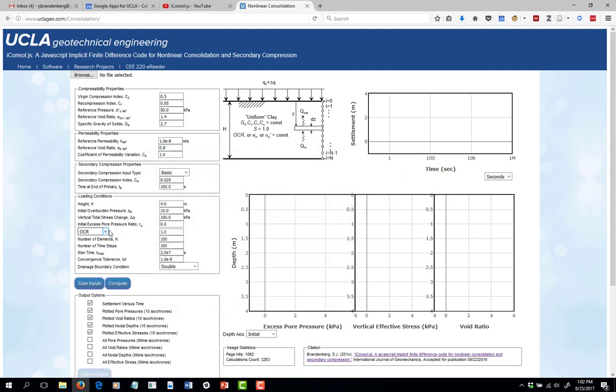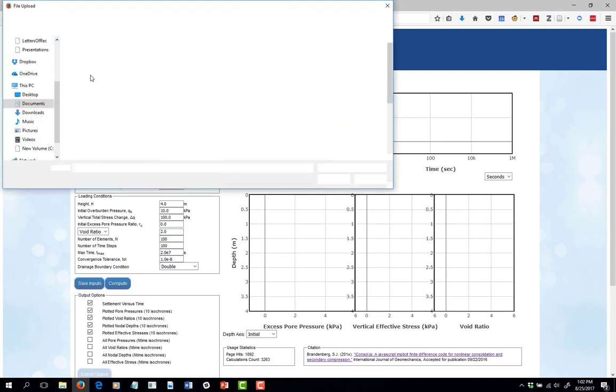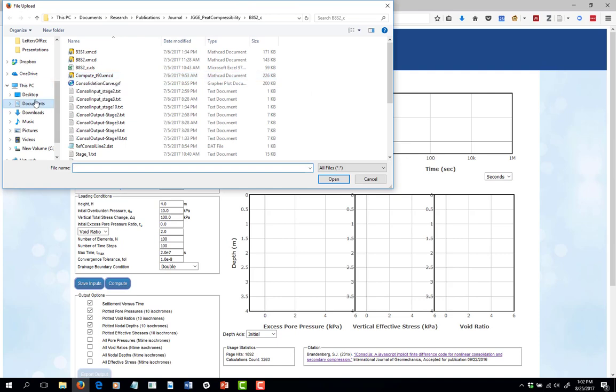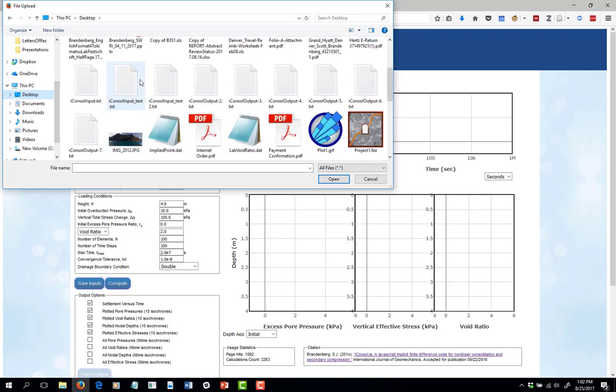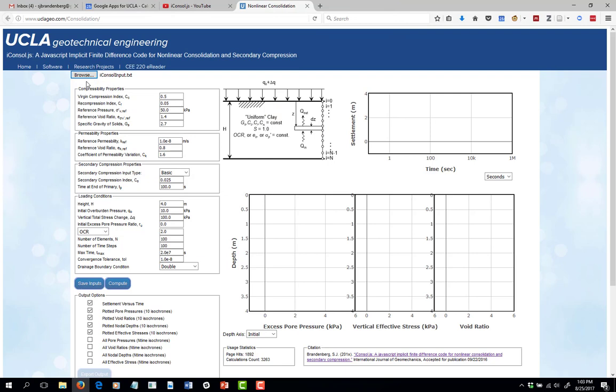I'll just save it right to my desktop as iconsol input.txt. Now let's come in and change an input parameter. Let's say that we have void ratio here, and it's 2. What I'm going to do now is browse up here and load that file that I just saved. I changed the OCR but didn't change the number. I'll put it manually back to one. There's a bug. I need to go through and work on that. That feature should be fixed by the time you actually watch this video.